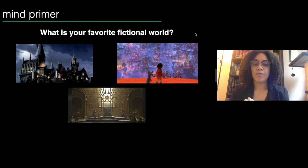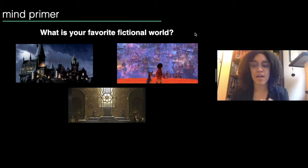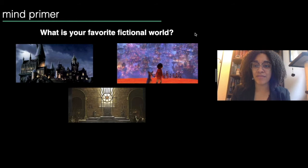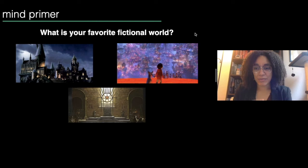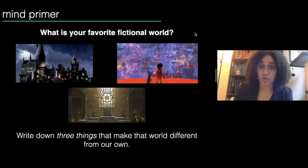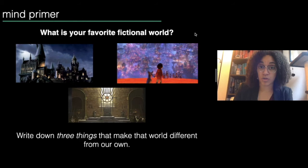First, I want everyone to prime your mind. We're going to be thinking about building our own fictional worlds, but let's start by thinking about the fictional worlds that already exist. Take some time and think about what your favorite fictional world is — from TV, books, movies, video games, really anything. One of my favorite fictional worlds is Narnia. It's a classic and a classic for a reason — I love the idea of talking animals and magic working. I'm a big sucker for beautiful magical systems. Once you have your favorite fictional world in mind, write down three specific things that make it different from our own reality. Pause the video here and write down your three ideas.